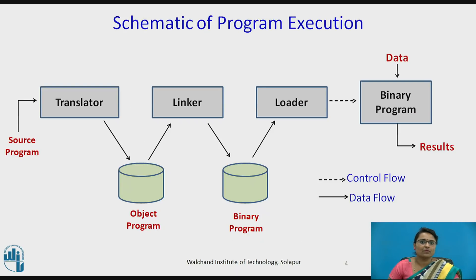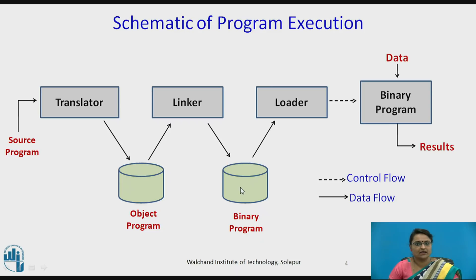Now let us see the schematic of program execution. The input is provided as a source program to the translator, which converts it into an object program — also called a target program — that is given as input to the linker. The linker links all the object modules required for execution, generating an executable binary program, which is then given to the loader. The loader loads it into memory for execution.